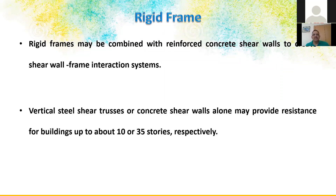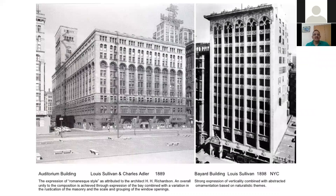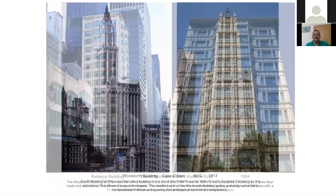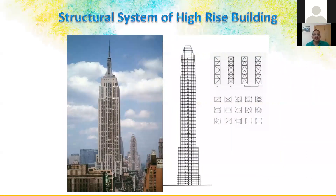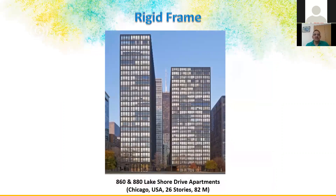The shear wall and shear truss concept is suitable up to about 35 floors. There are many world buildings that use this approach — including older ones constructed 100 years ago. Structural system options include shear truss alone, combination of shear truss and shear wall, braced frames, braced shear wall, and rigid frames as seen in Lakeshore Drive in Chicago.